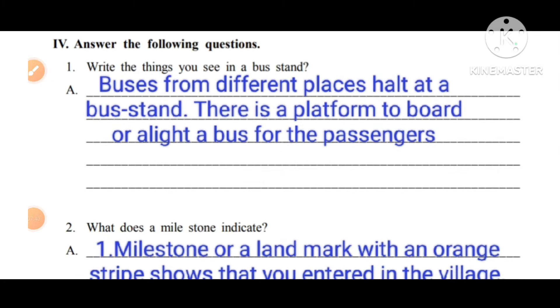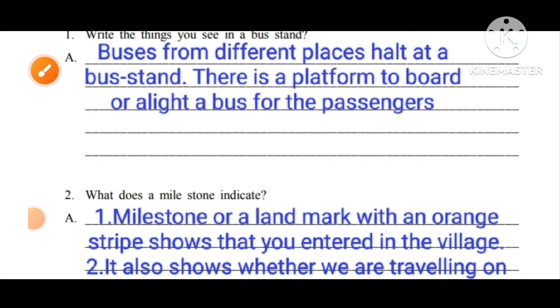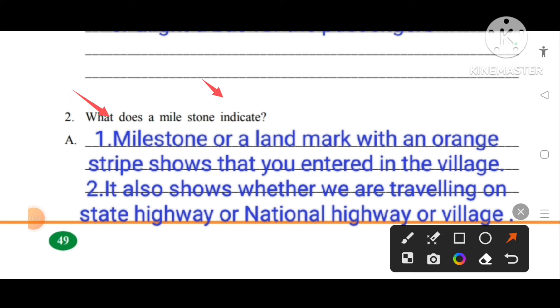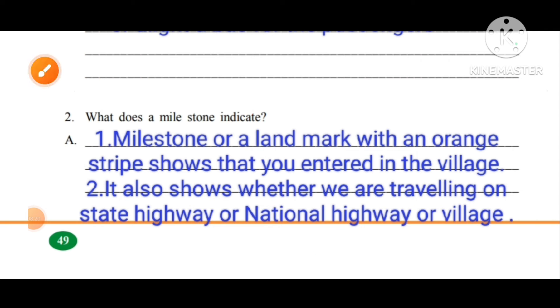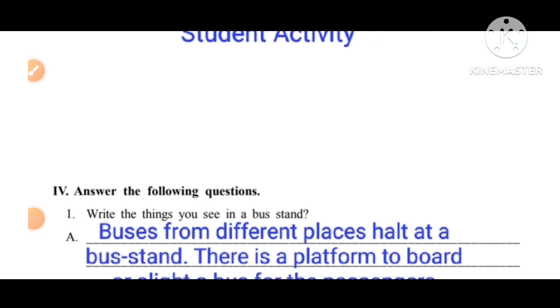Answer the following questions. First one: write the things you see in your bus stand. Buses from different places halt at a bus stand. There is a platform to board or alight a bus for the passengers. What does a milestone indicate? A milestone or landmark with an orange stripe shows that you have entered a village. It also shows whether you are traveling on state highways or national highways.